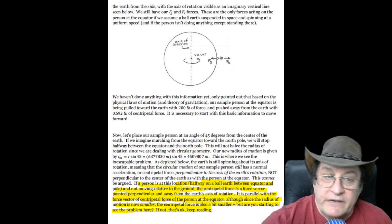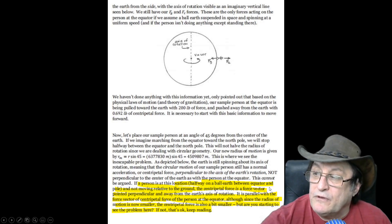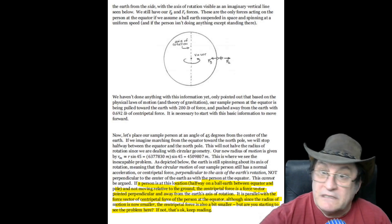This is where we start to get into the area where the mistakes are made. Now, if a person is at this location, halfway on a ball Earth between the equator and pole, and not moving relative to the ground, the centrifugal force is a force vector pointed perpendicular and away from the Earth's axis of rotation. Correct. It's parallel with the force vector of a centripetal force of the person at the equator. Correct. And since the radius of motion is now smaller, the centripetal force, and we're talking centrifugal, remember, is also a bit smaller. Correct. Are you starting to see the problem here? No, there's no problem. That's all correct. There's no problem.